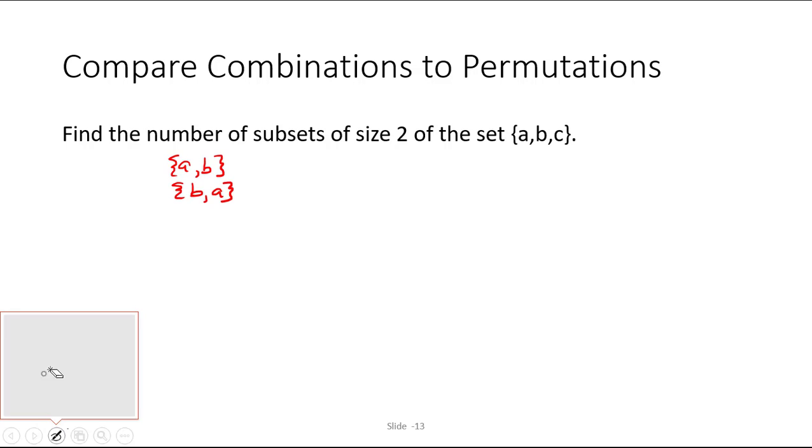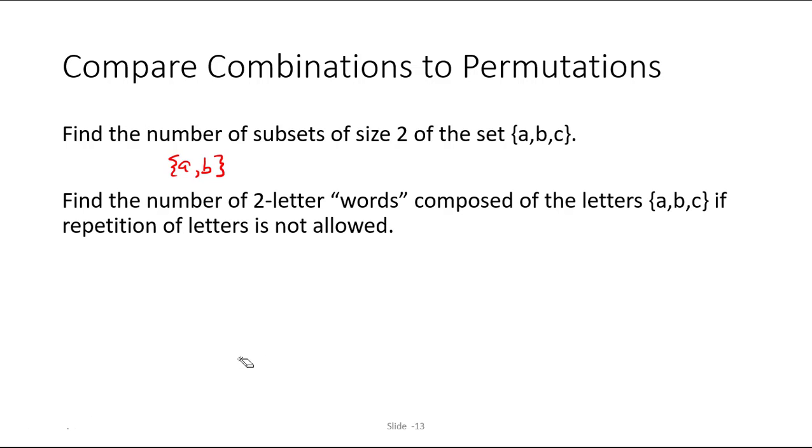When order does not matter, you're just looking for a subset, then you can use a combination. On the other hand, if I asked you to find the number of two-letter words composed of the letters {a,b,c}, if repetition of letters is not allowed, that's asking you to arrange them. So we might have the word ab or we might have the word ba, and those are two different words. The order does matter.